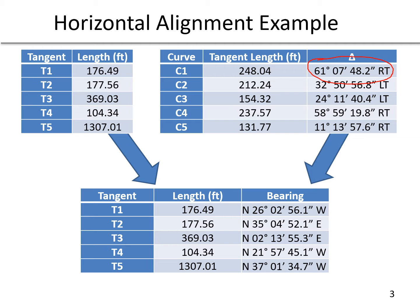We're going to take that bearing — the first bearing given — and turn 61 degrees to the right. Adding those two together gives us the bearing of the second tangent: north 35 degrees 4 minutes 52.1 seconds east. The difference between the first and second bearing is that delta. That's how we combine those to find the bearings of each tangent in our tangent table.